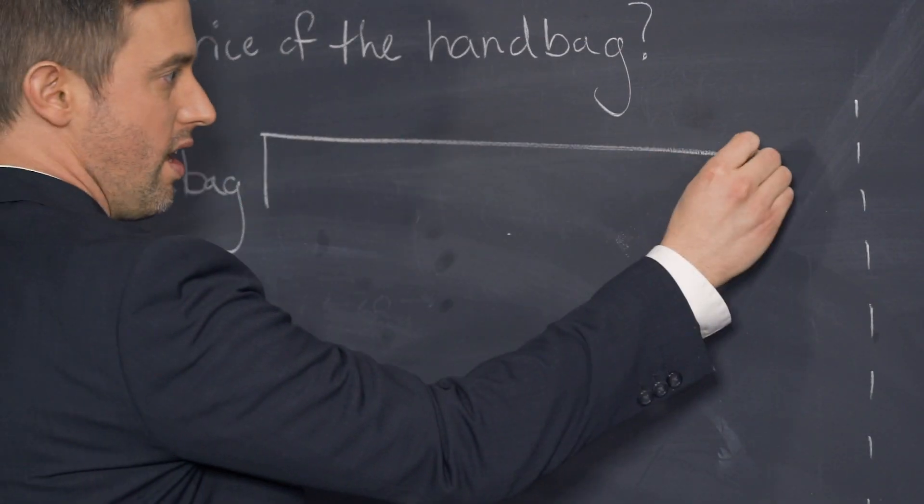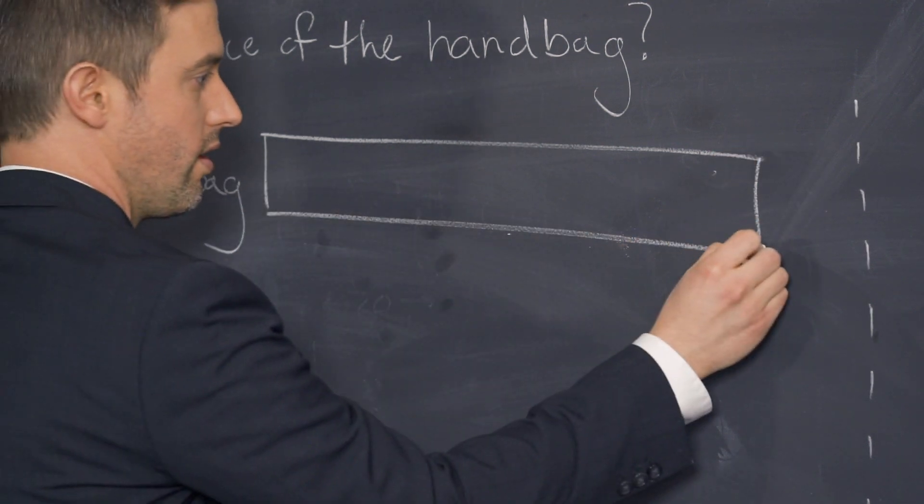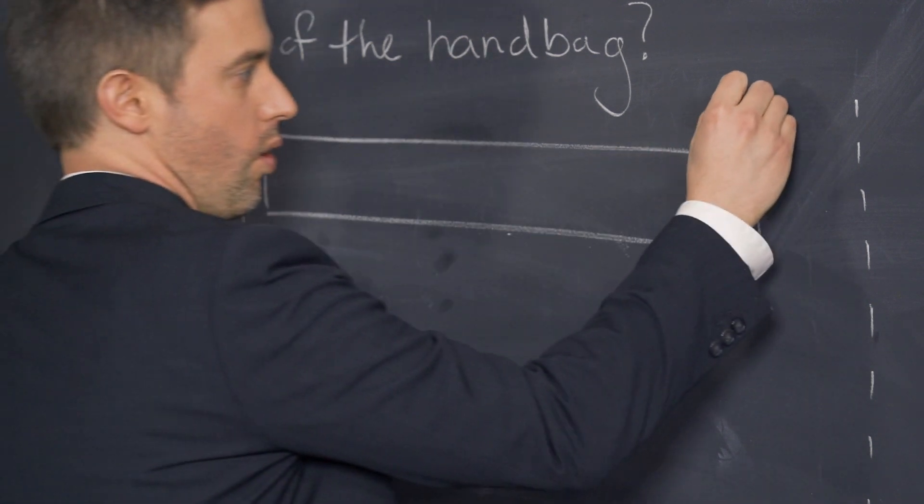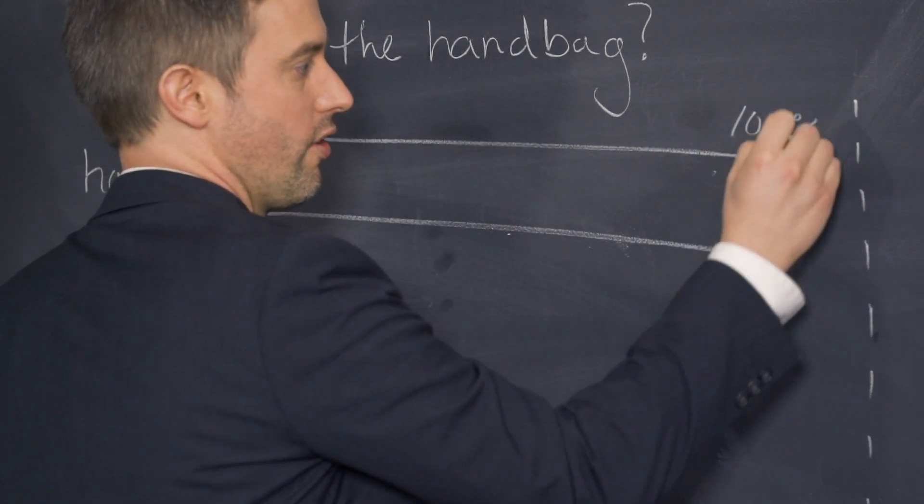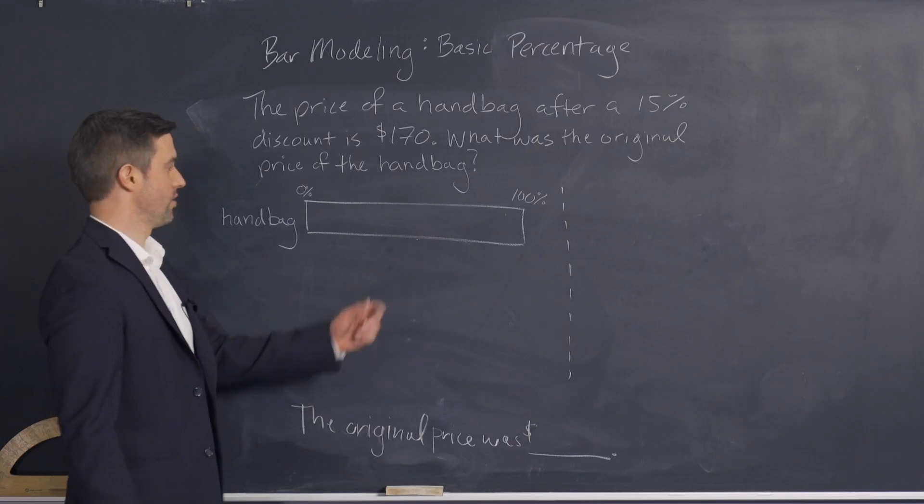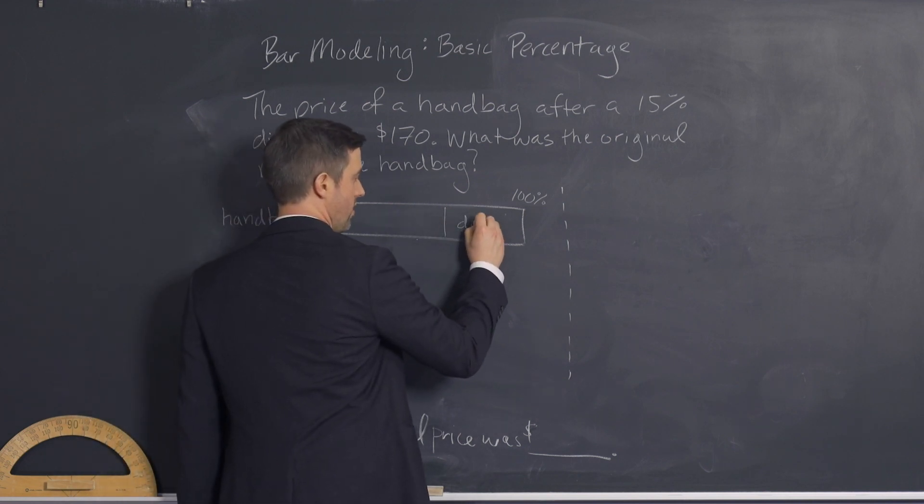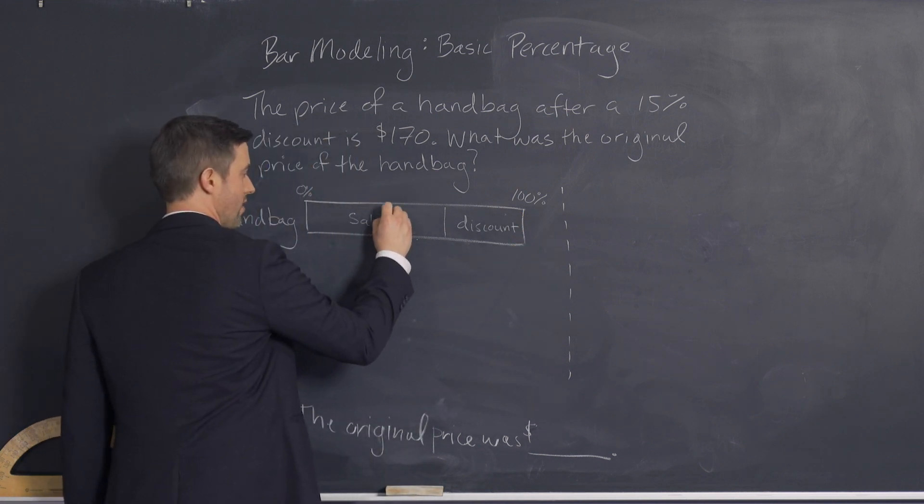You want to represent a percentage problem where you mark 0% on one end, 100% on the other end, and we're going to put the discount somewhere in here, and this is going to be the sale price.